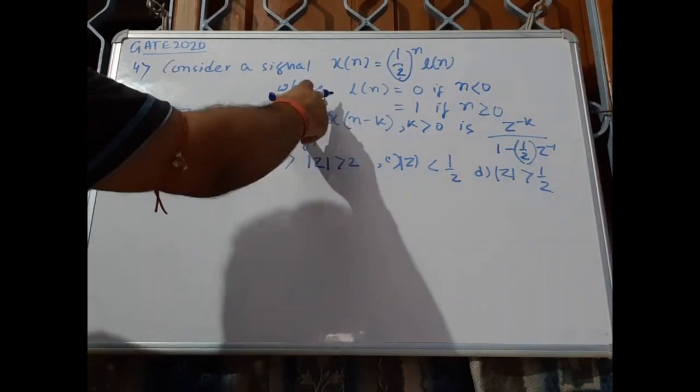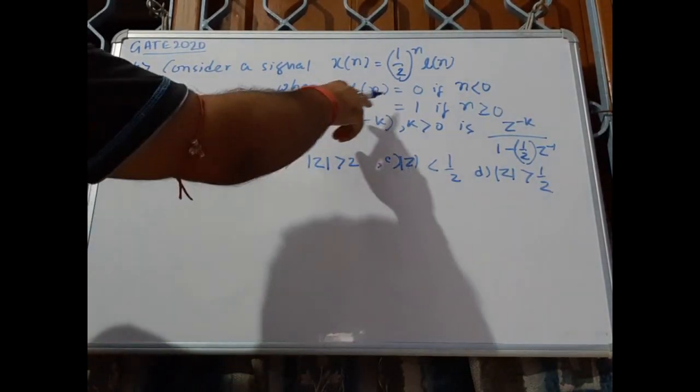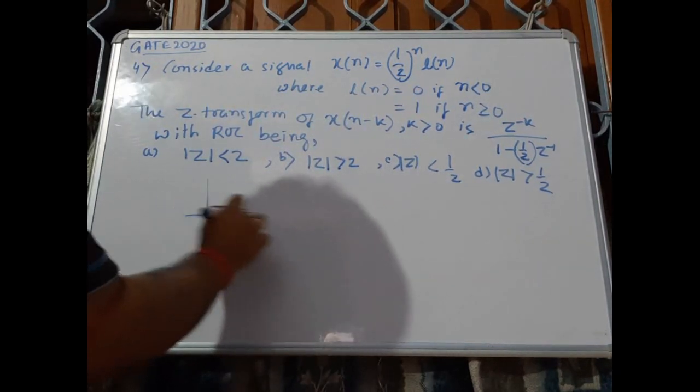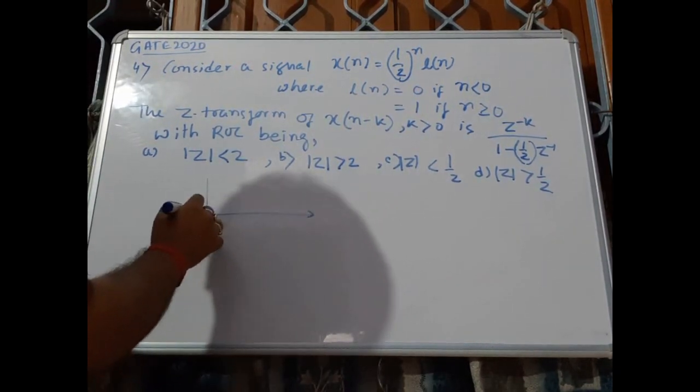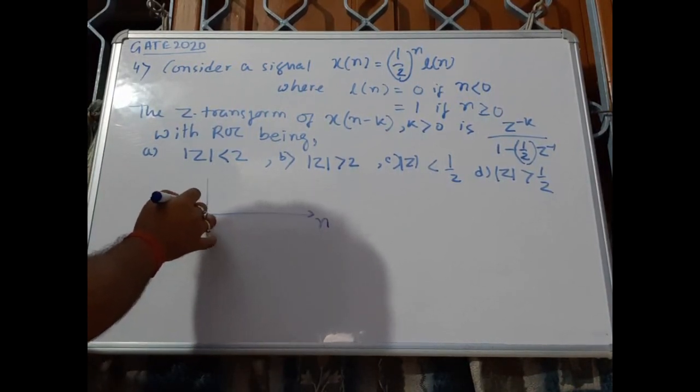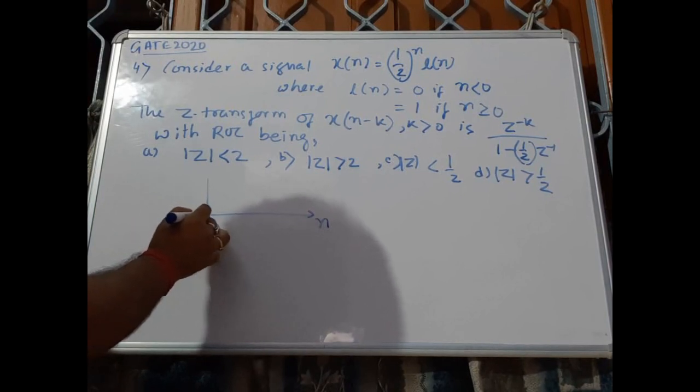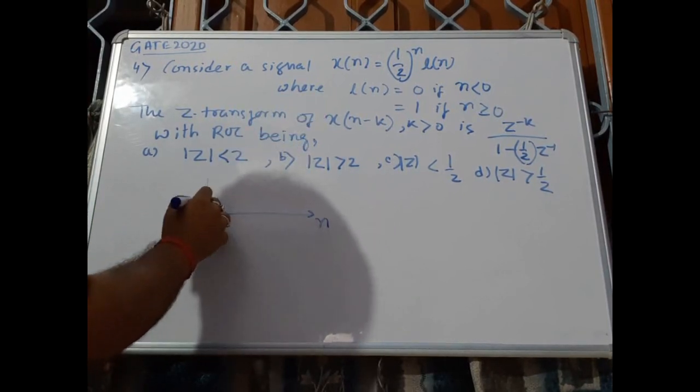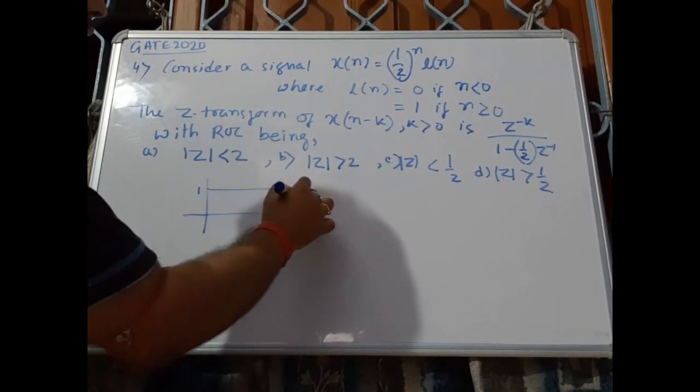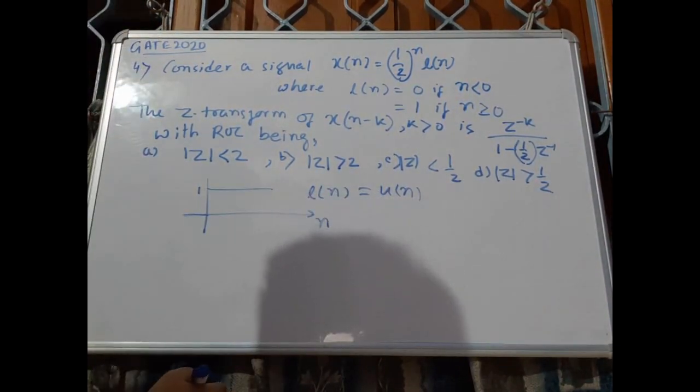Now you can see from this condition of l(n): l(n) is 0 for n less than 0, so on the negative side this is 0, and for n greater than or equals to 0, it is 1. So this is nothing but a unit step function.